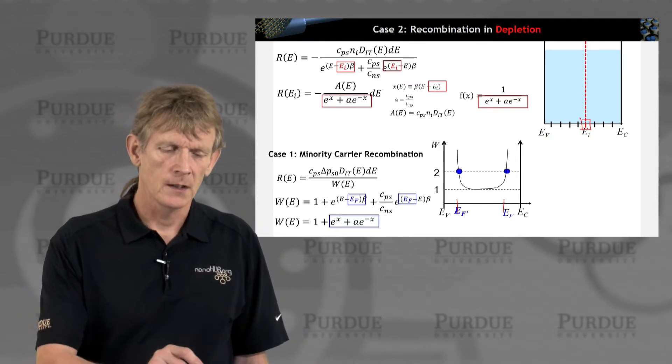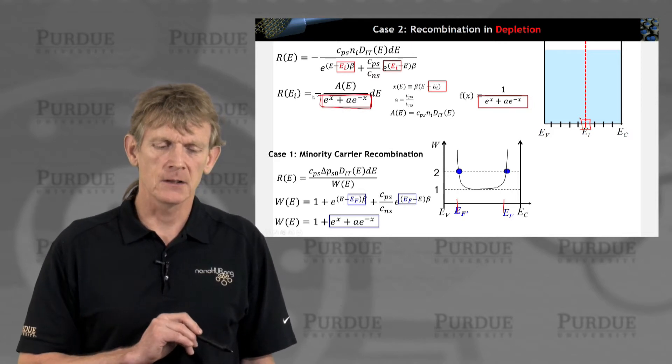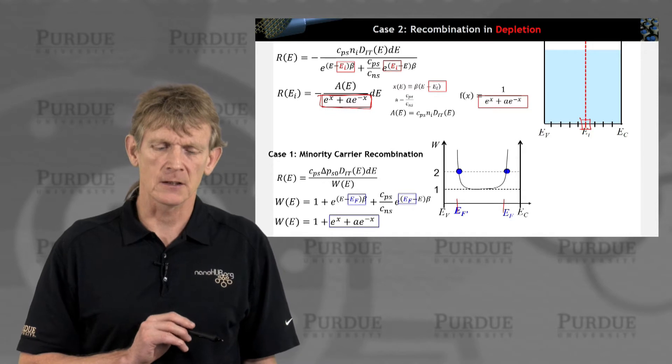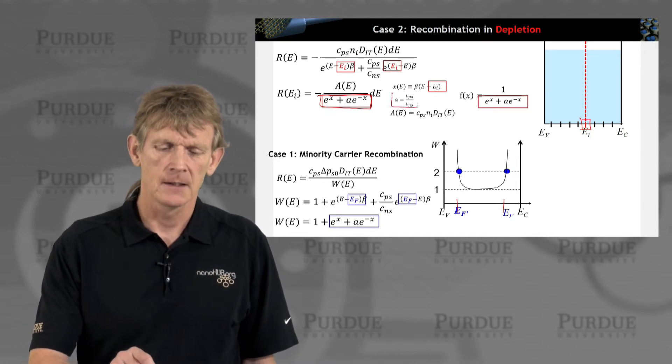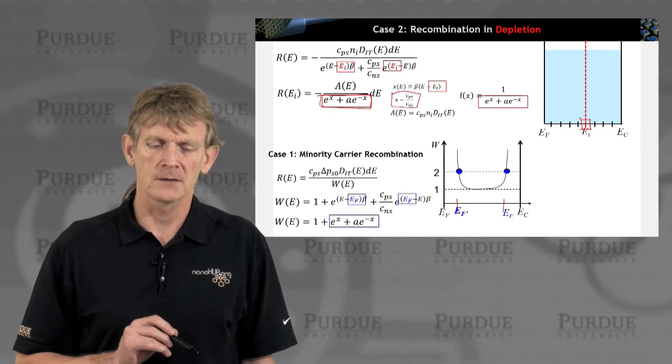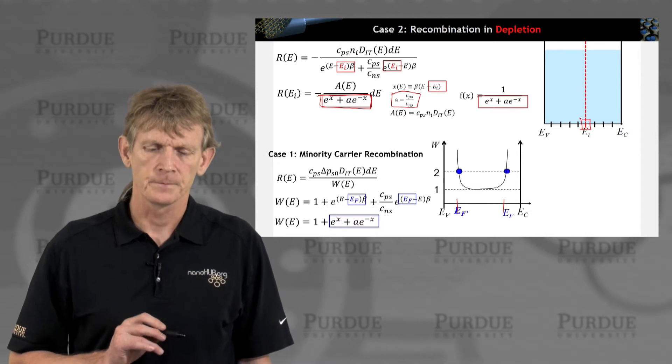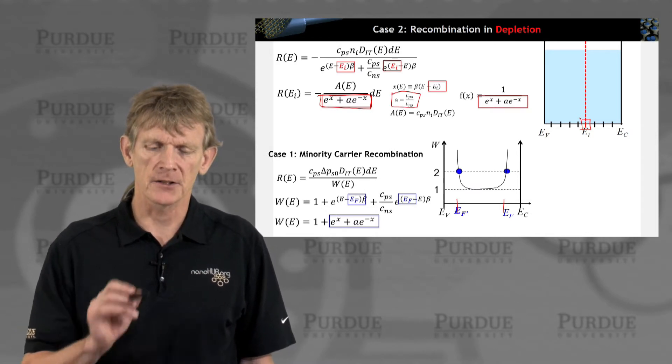Let's assume we, again, expand this exponential, determined the denominator as exponentials. And we can define some a as a ratio of ps over Ns.